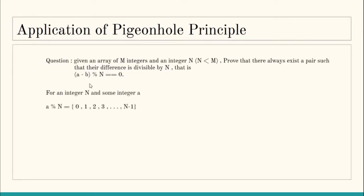We will use the pigeonhole principle alongside modular arithmetic to prove this. For any integer a, a modulo n maps to one of the elements of the residue class of n — that is, a mod n is either 0, 1, 2, 3, ..., or n minus 1. This is also called the residue class of n, which contains exactly n elements.